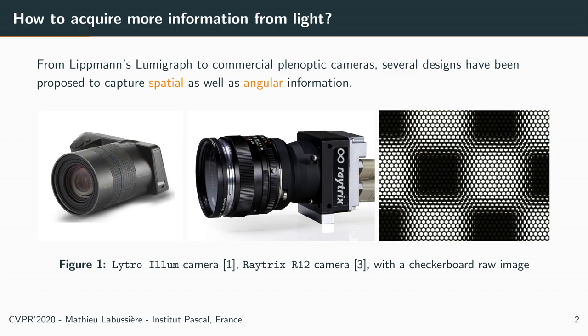Classic cameras capture only a small portion of light information. From Lipsmann Lumigraph to commercial plenoptic cameras, several designs have been proposed to capture more information from light. For instance, the Lytro and Raytrix plenoptic cameras are able to multiplex the spatial and angular information, as illustrated by this raw image of a checkerboard.